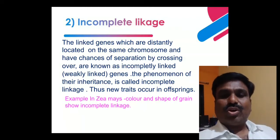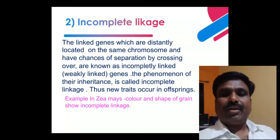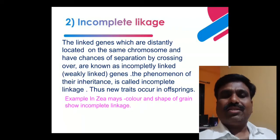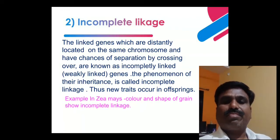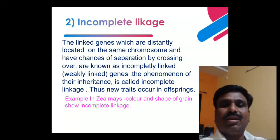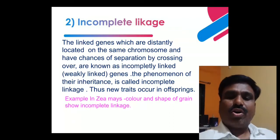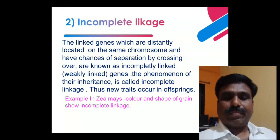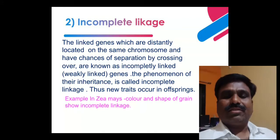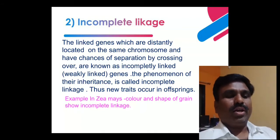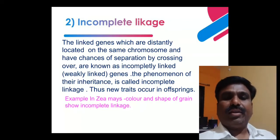In complete linkage there is no chance of crossing over — genes are closely located on the same chromosome and do not separate. But in incomplete linkage, the linked genes are distantly located, not closely located on the same chromosome, and have a chance of separation by crossing over — these are known as incompletely linked genes. Incomplete linkage is weakly linked, not strongly linked, and the linkage is temporary, not permanent. Genes get separated at the time of gamete formation and crossing over.